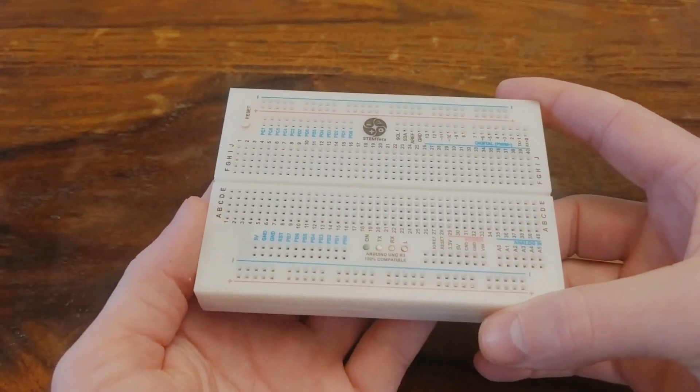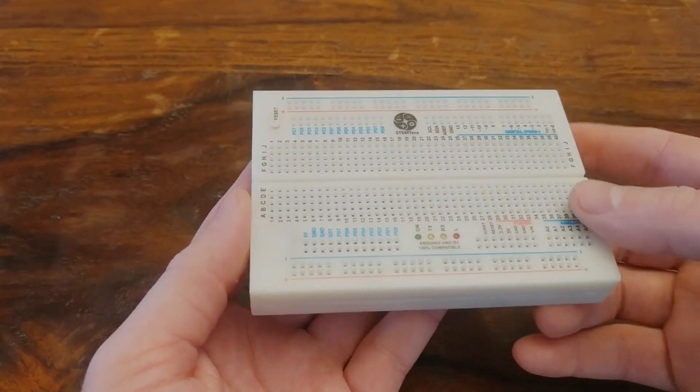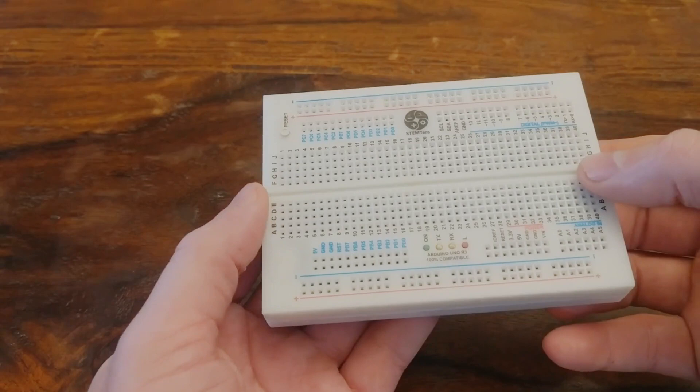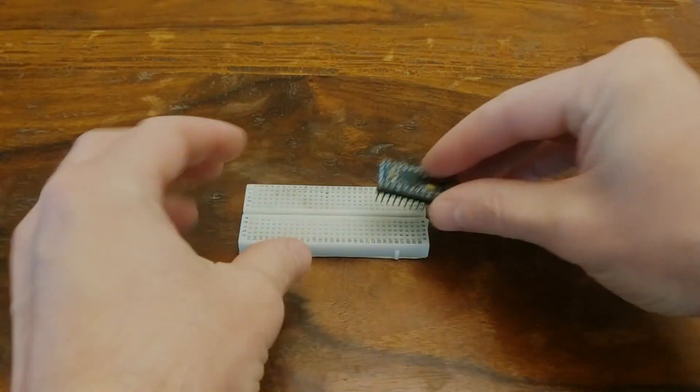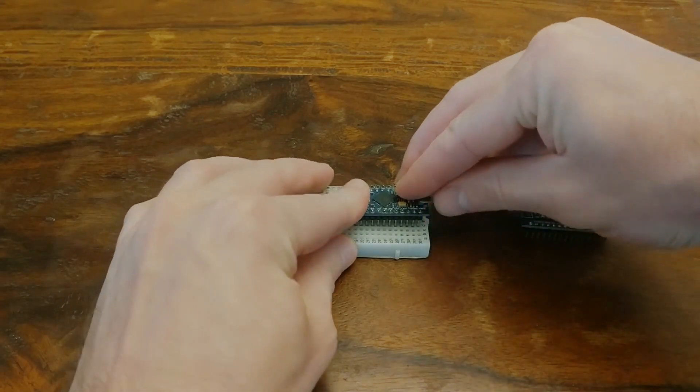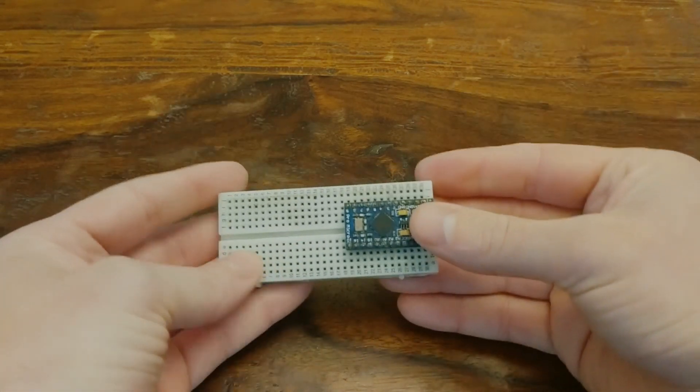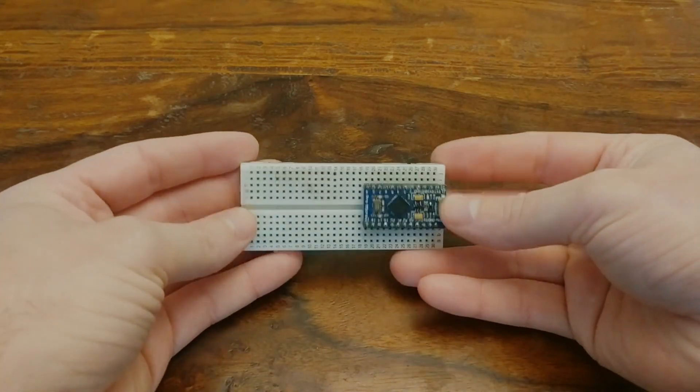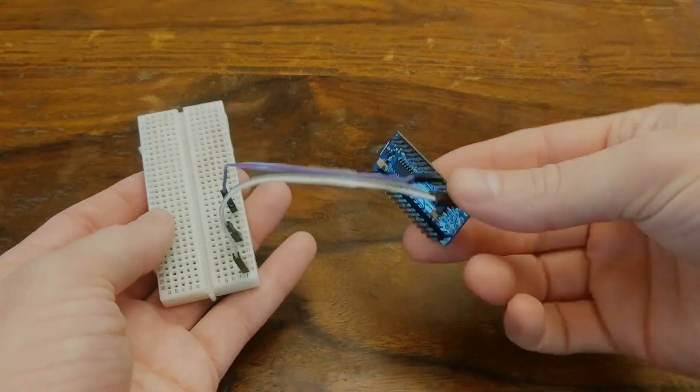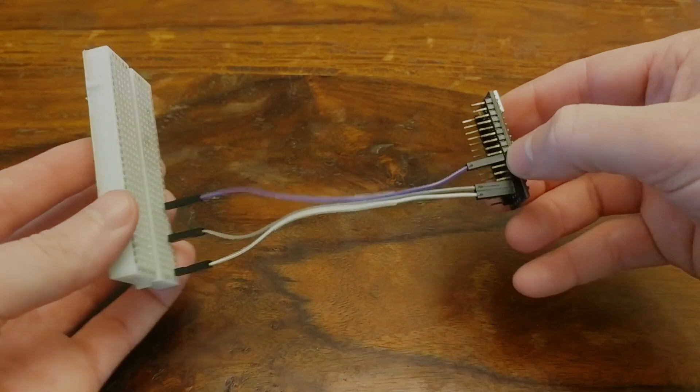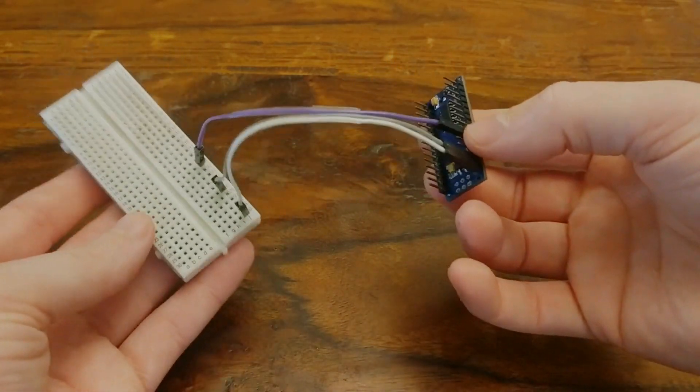The biggest advantage of this is that it's so compact, because if you wanted to connect a normal Arduino to a breadboard, you'd either have to get one of the smaller nanos or micros that fit onto the board itself, which uses up a lot of pin space, or you have to connect it using jumper wires, which ends up being bulky and kind of fragile because they tend to disconnect when you move things around.